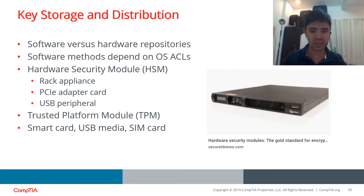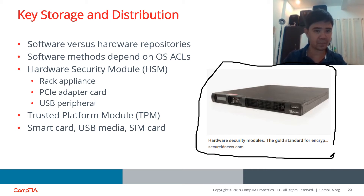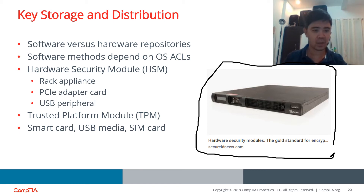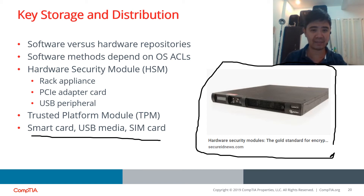Here is a picture of an HSM. Key storage may be implemented by software or hardware. If software-based, the key is stored on the server and protected by setting up an ACL — Access Control List. Hardware-based key storage is implemented through HSM, or through smart cards, USB media, and SIM cards. Another option is TPM — Trusted Platform Module — a chip in a PC or laptop used to generate, store, and protect keys.